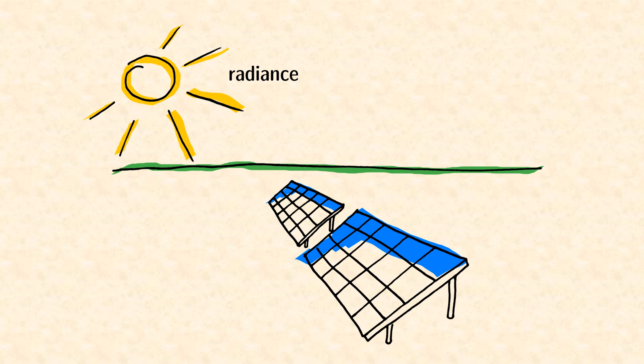Radiance is the flux of radiation leaving a surface, for example, the sun. And irradiance is the flux of radiation entering, for example, the surface of solar cells.